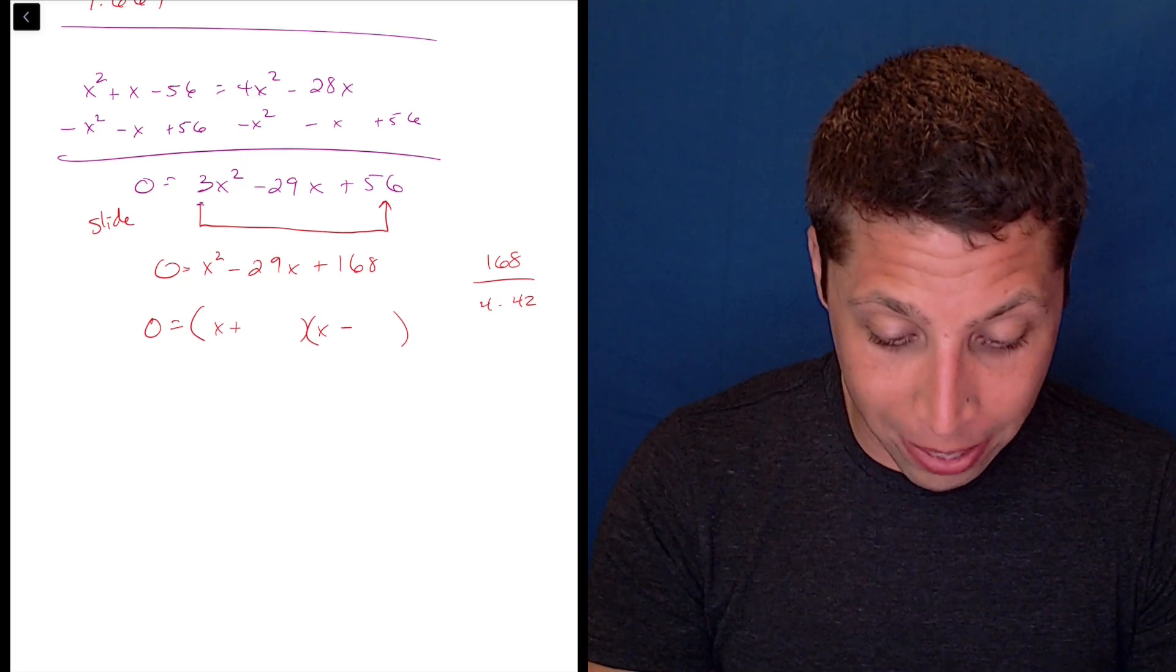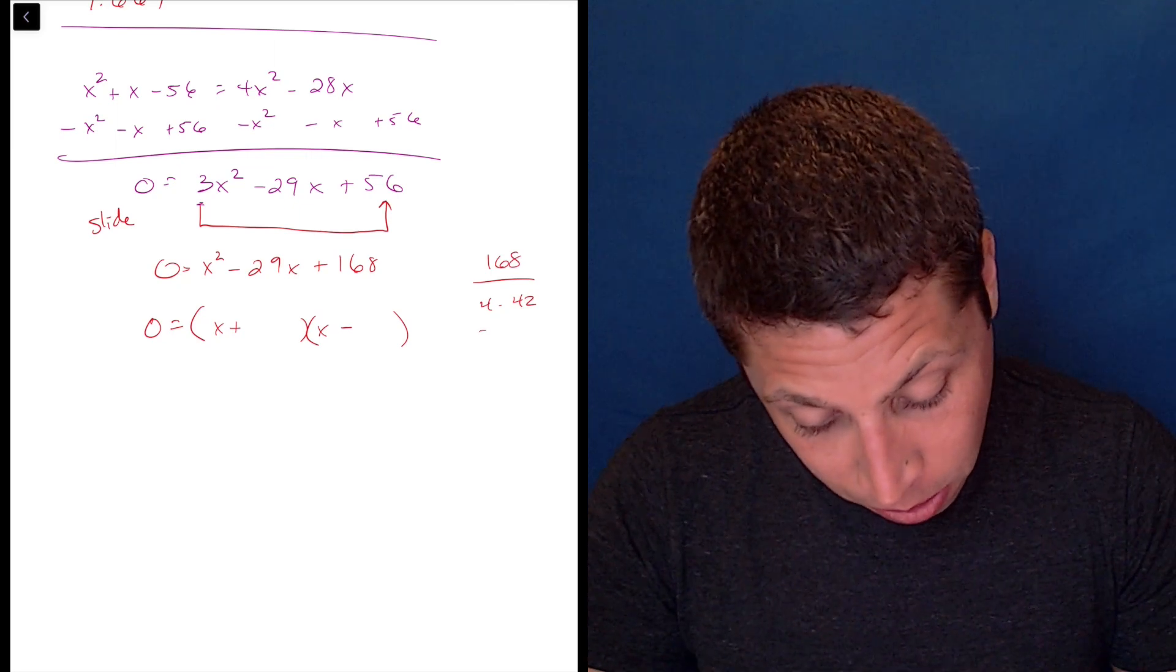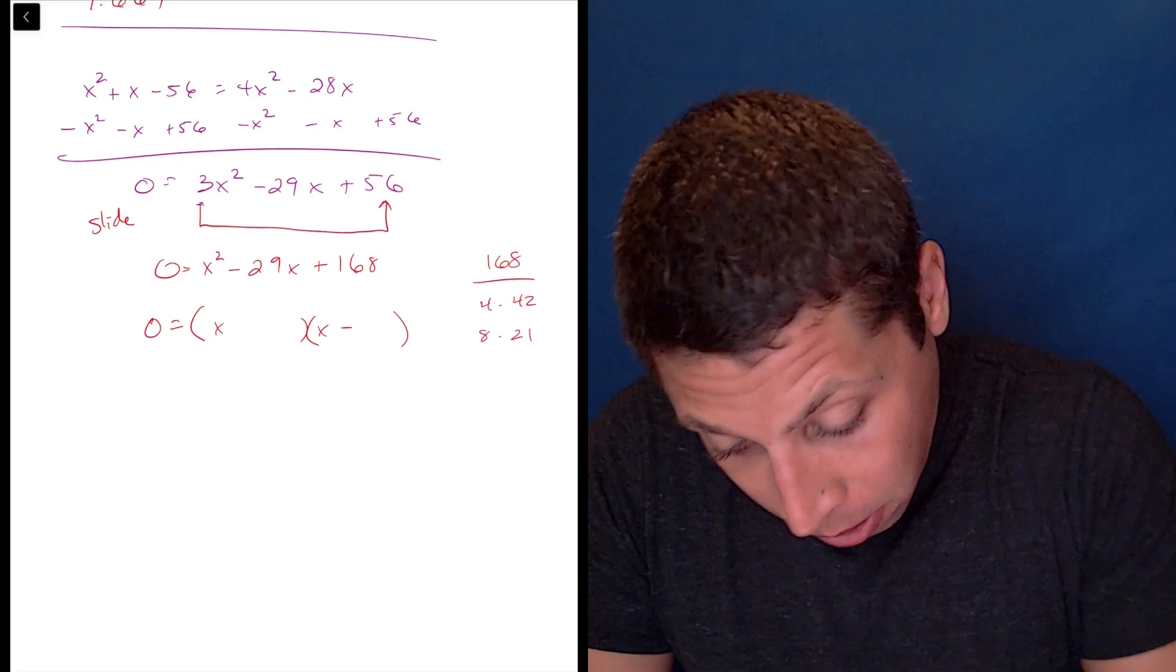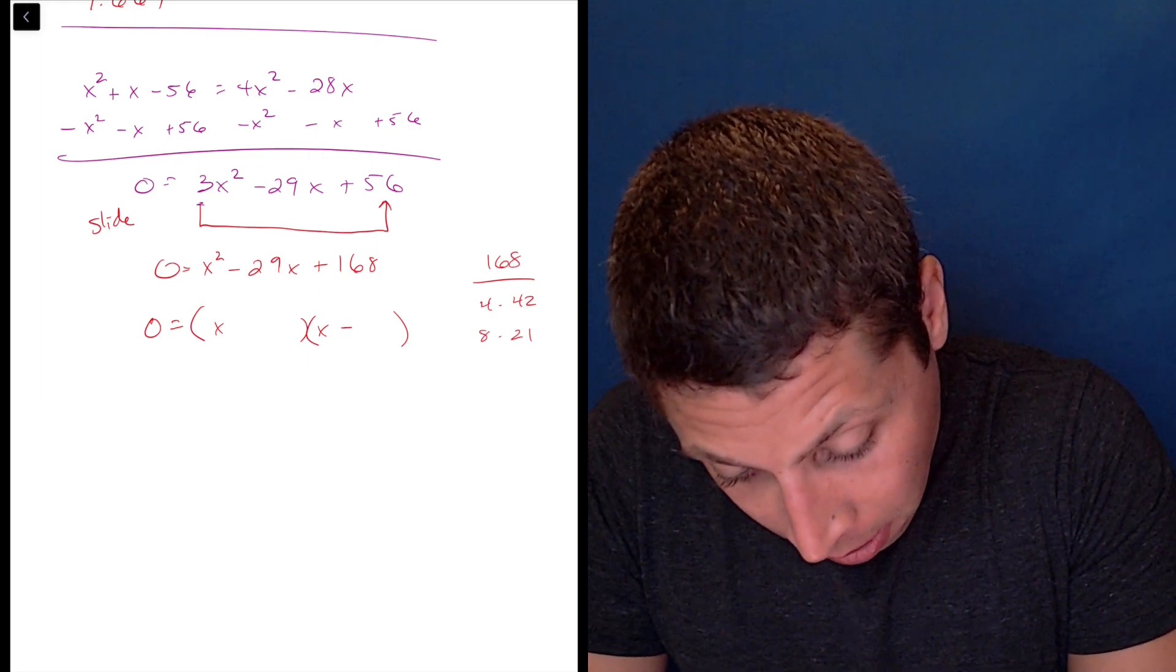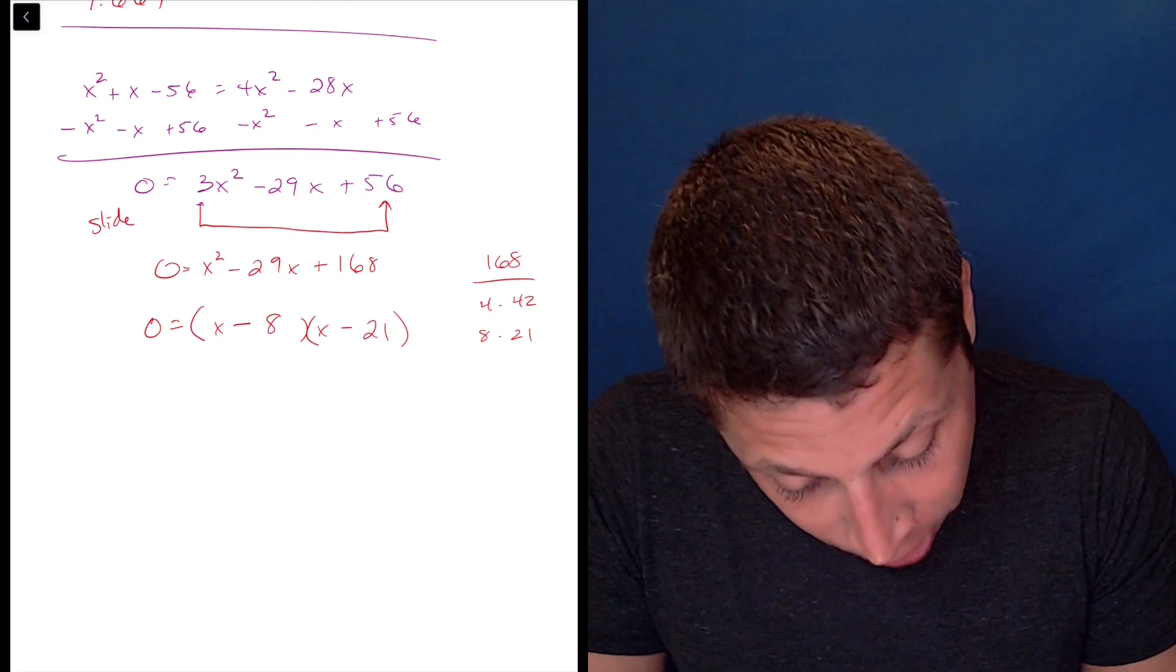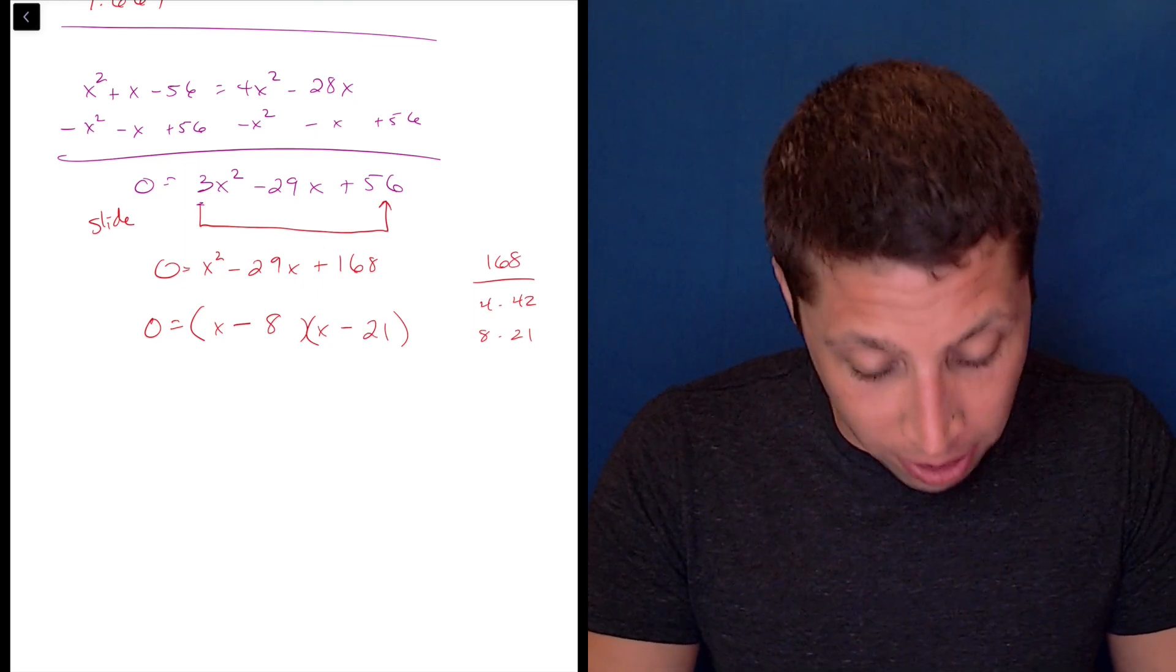Maybe let's do 168 divided by 8. So 8 and 21. So actually, nope, I was wrong before. It's two negatives. So that's going to work. Minus 8, minus 21, 8 and 21 adds to 29,